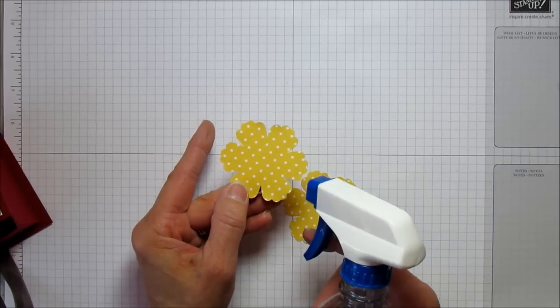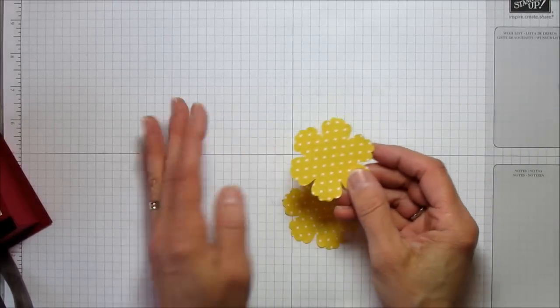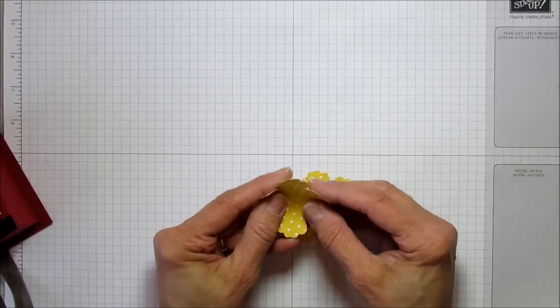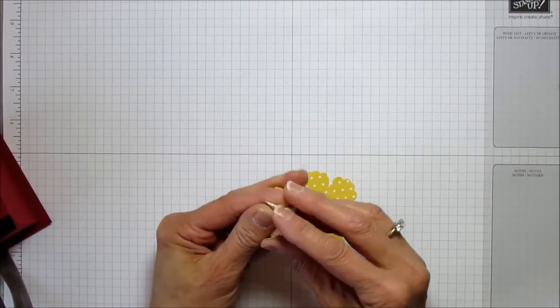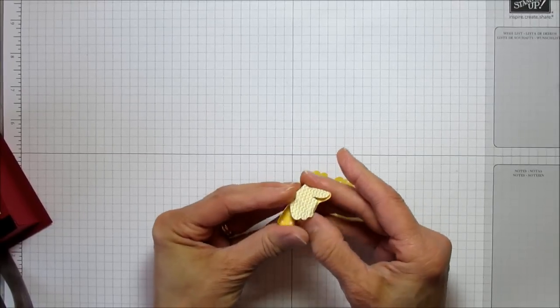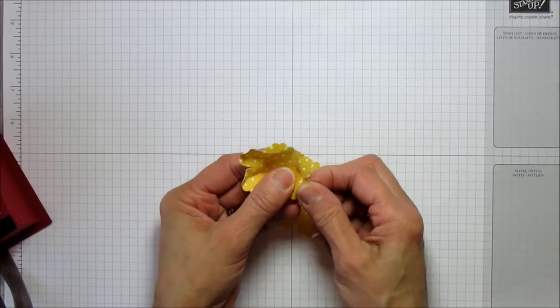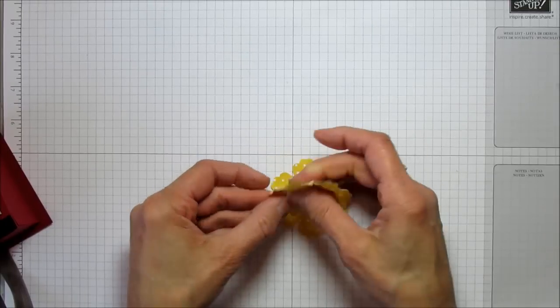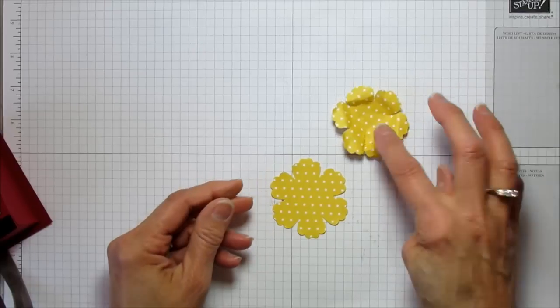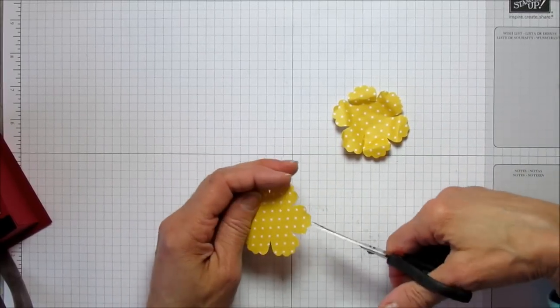I've made one ahead of time so you don't have to sit and wait. You can use your hair dryer or embossing tool to dry it to speed up the drying time if you like. I just give it a couple squirts, which I'm not going to do because I don't want to mess up my mat here. Then you just crinkle it all up - it'll crinkle really easily. Then you just unfold it and you can play with it. You can curve the ends, you can do whatever you want.